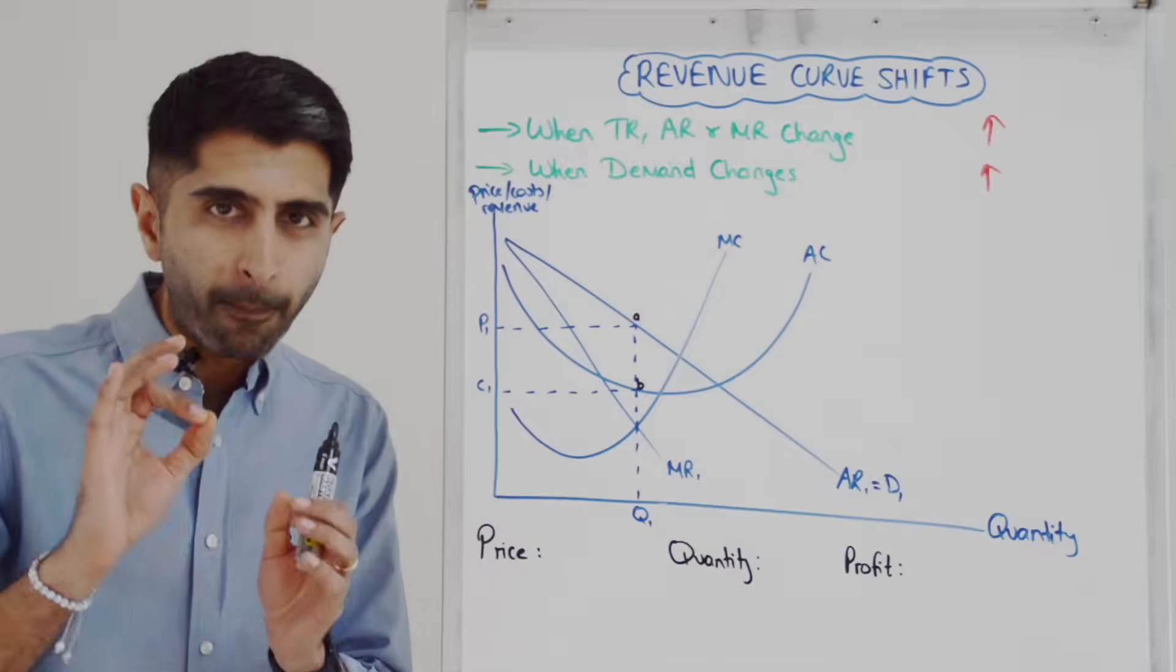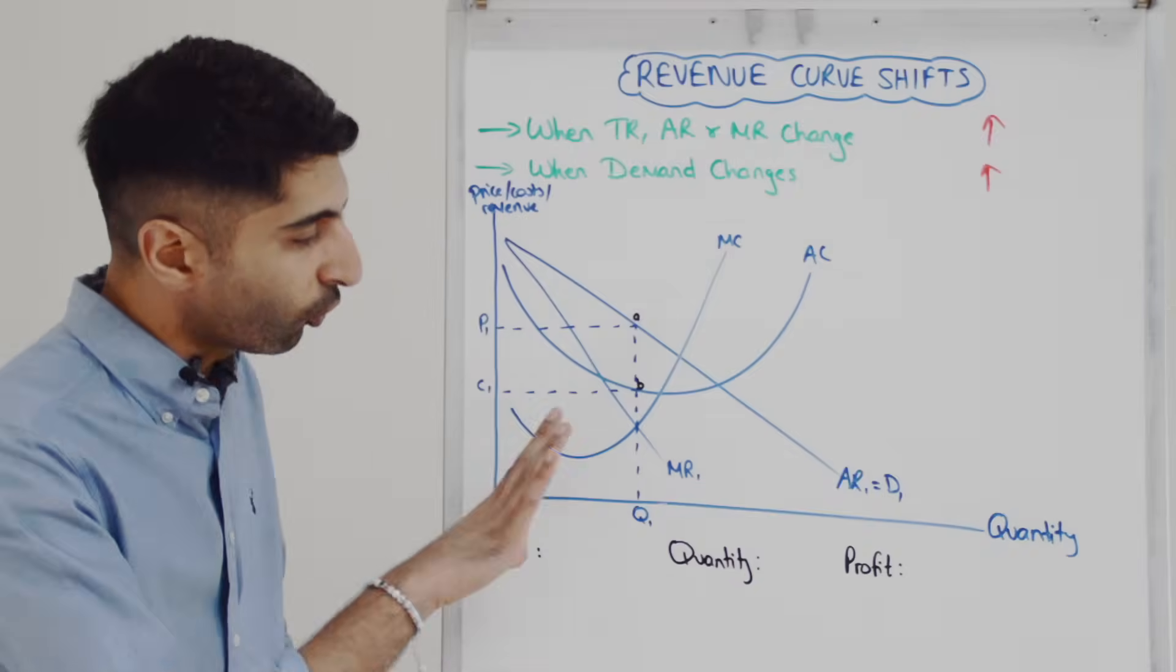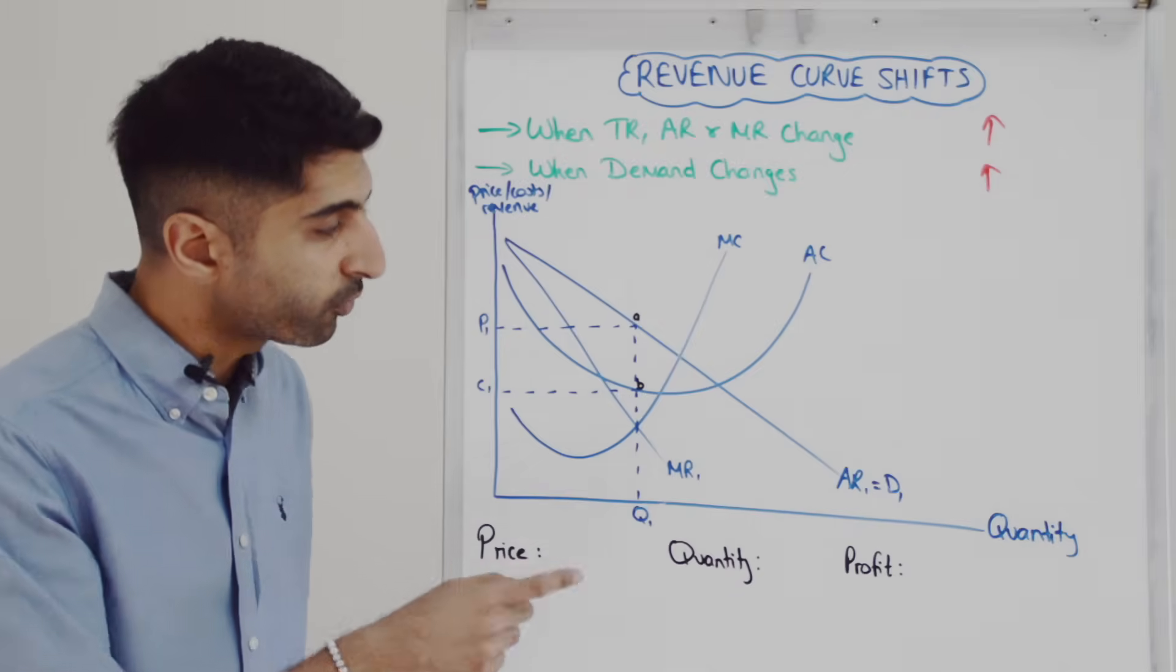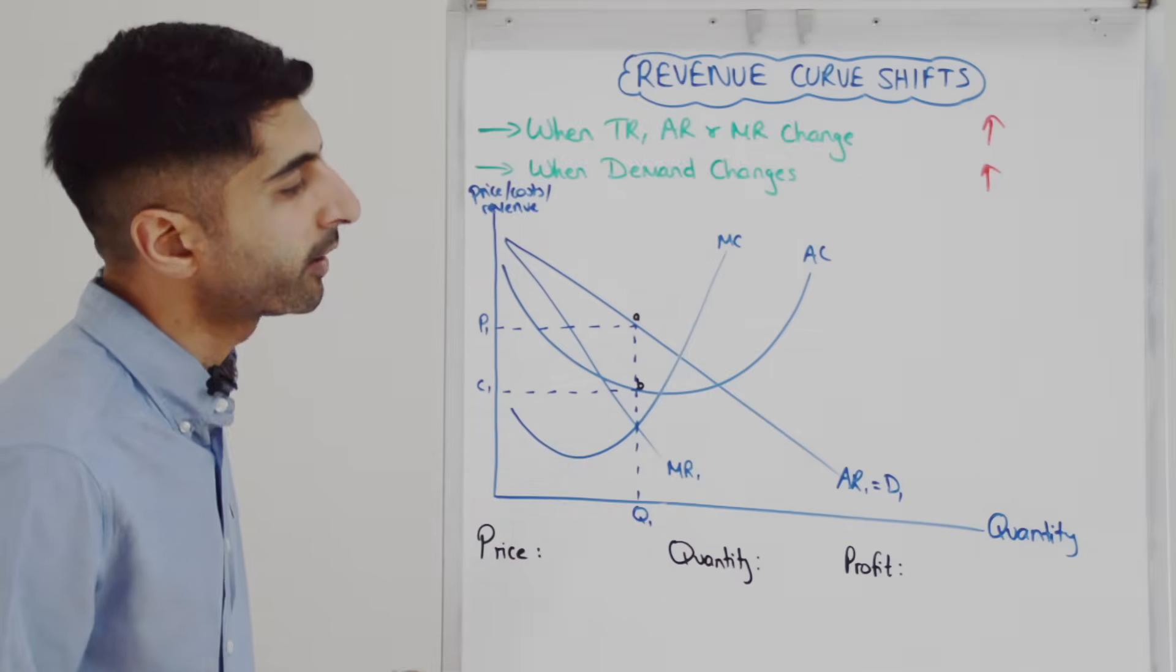Before we shift, just remember our basic process because this diagram is going to look a little bit messy at the end. So always we go profit max, MC equals MR, that's where Q1 comes from originally. We read the price off the AR curve, that's where P1 comes from.